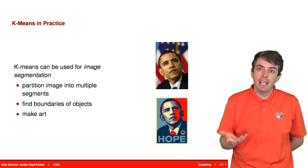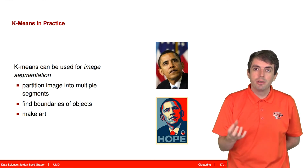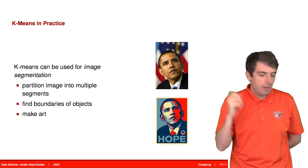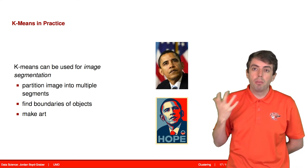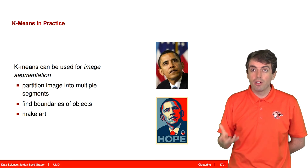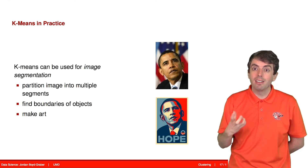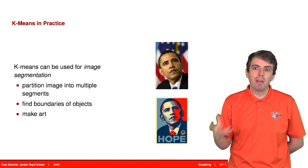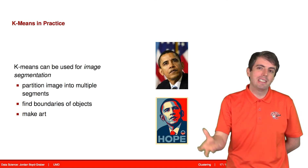One fun application of k-means is image segmentation, where you find parts of an image that look alike. You may recall the famous Obama 'Hope' picture — you can create stylized images like that using image segmentation. Each pixel is viewed as a point in three-dimensional RGB (red, green, blue) color space. By clustering those pixels, you find the palette that makes up the image — for example, the four most common colors — and use their cluster averages to create a stylized version of the picture.